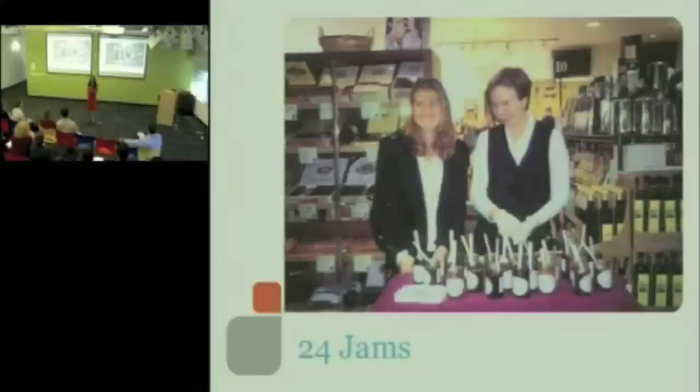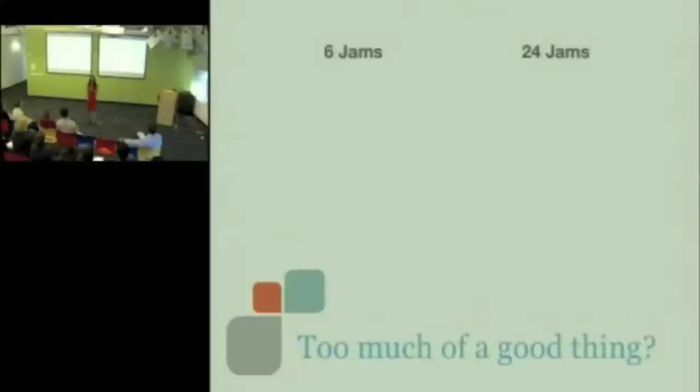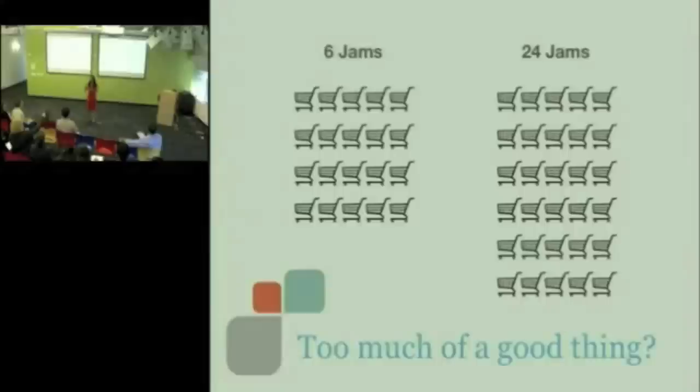Second, in which case were people more likely to take the opportunity and use the coupon that we just gave them for free, giving them $1 off of a bottle of jam? In which case are they more likely to buy a jar of jam? Now, more people stopped when there were 24, 60%, as compared to when there were six, 40%. But when it came down to buying behavior, we saw the opposite effect. Of the people who stopped when there were 24, only 3% of them actually bought a jar of jam.